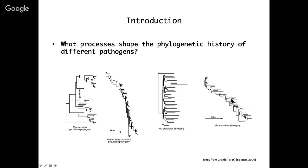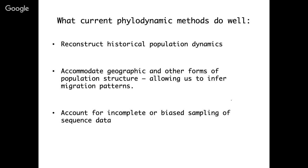We can contrast this to what phylogenetic methods are typically used for in molecular epidemiology and the population genetics of pathogens. Most of the time, we're interested in reconstructing the past — generally neutral ecological dynamics or neutral demographic processes. Using methods like the coalescent, we can reconstruct historical population dynamics, or use methods like the structured coalescent to incorporate geographic or other forms of population structure, allowing us to infer migration rates between different populations.